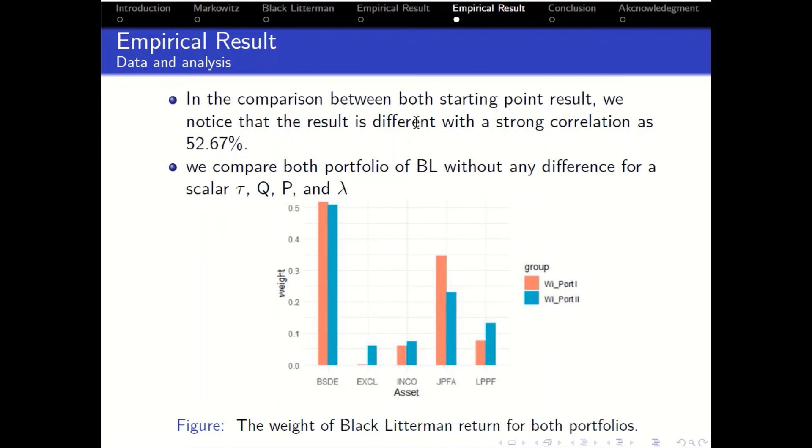From comparison between the P, we notice that the result is very different, but the strong correlation between P1 and P2 is 52.67 percent, without any difference for Omega, tau, P and lambda in Black Litterman.